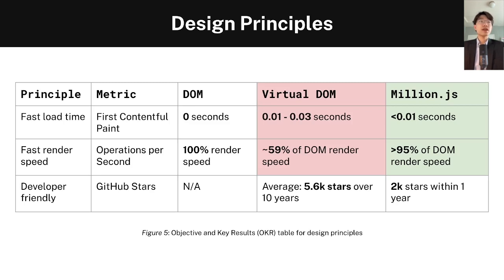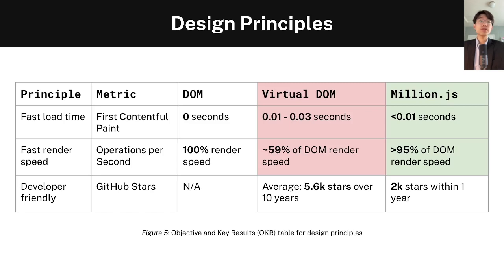Additionally, Million wants very fast render speeds, measured by operations per second. If we pin the DOM at 100% rendering speed, the Virtual DOM is roughly 60% of that, which is really suboptimal. Million's aim is to close the gap and achieve over 95% of the DOM's rendering speed. Million also needs to be very developer-friendly, measured through GitHub stars. The Virtual DOM has cumulatively received over 5,600 stars over the last decade. Million's aim is to have 2,000 stars within one year.